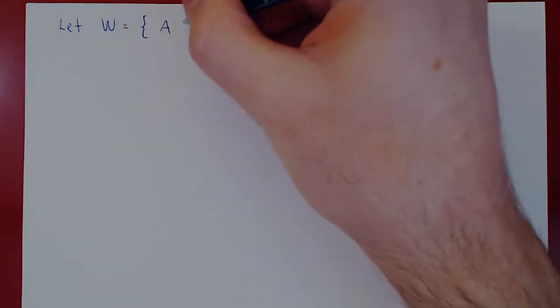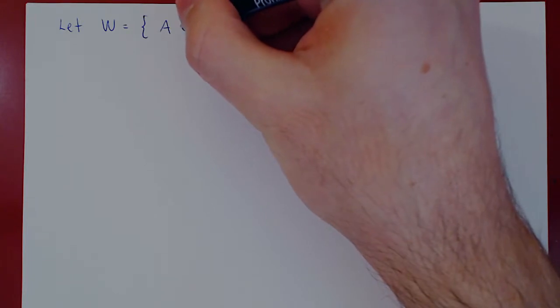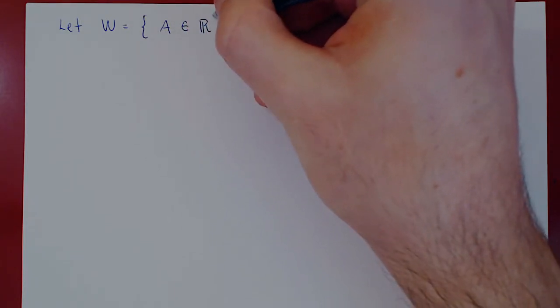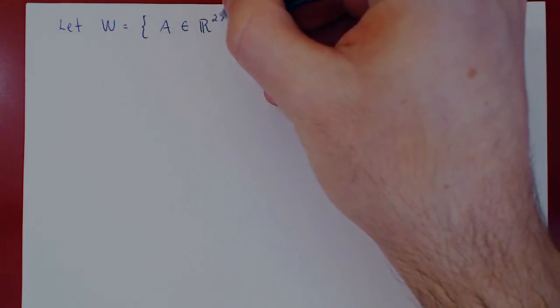In this video, we are considering our second example of the subspace theorem, and we will consider the space of 2 by 2 symmetric matrices. So call this space W. We will take the matrices A that lie in R2×2.